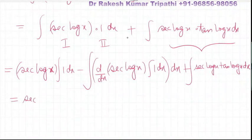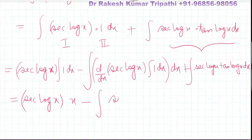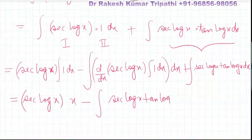Sec(log x) times integral of 1 is x, minus differential of sec(log x) is sec(log x) tan(log x) times the derivative of log x which is 1/x, times integral of 1 which is x. The x can be cancelled, so they should be cancelled.